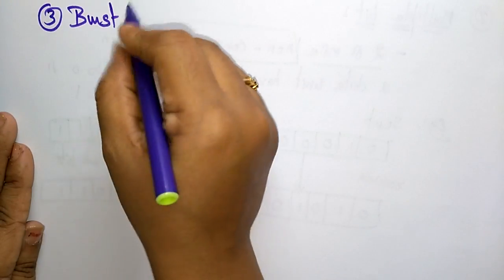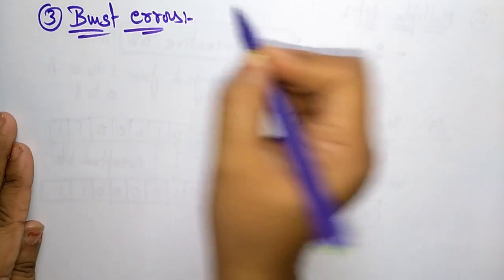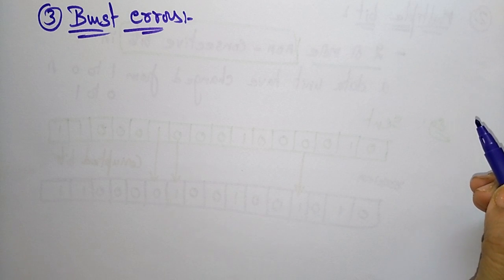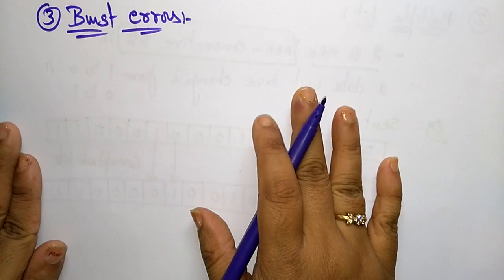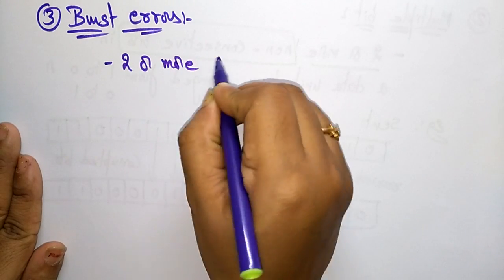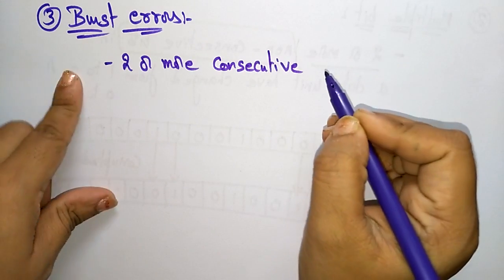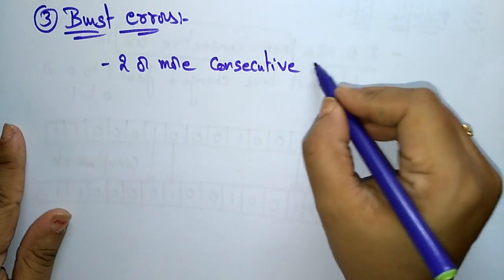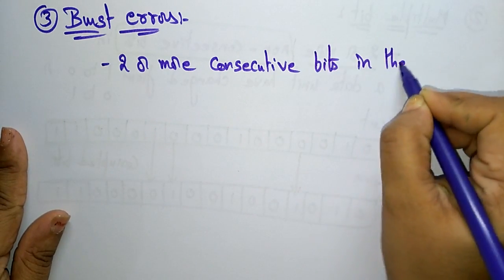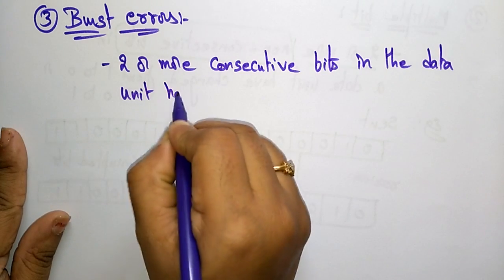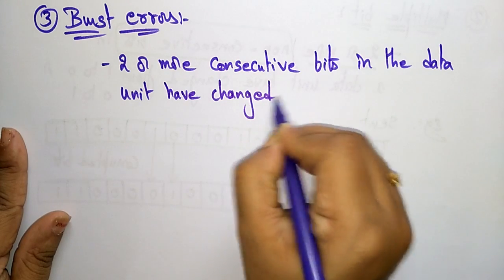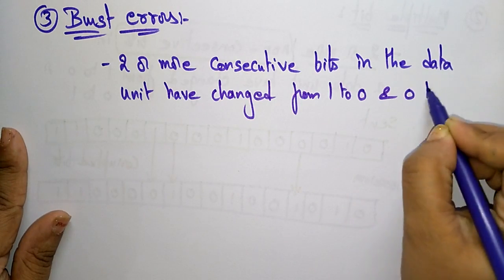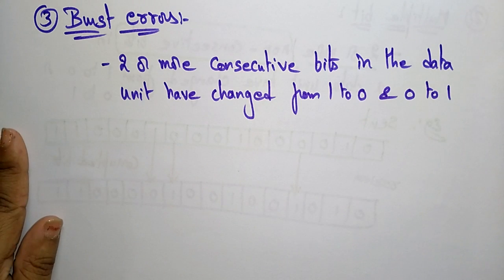The third type of error is the burst error. You need to understand the basic error types before learning detection and correction techniques. Burst error means two or more consecutive bits — unlike multiple bit error which involves non-consecutive bits, burst error involves two or more consecutive bits in the data unit that have changed from 1 to 0 or 0 to 1.